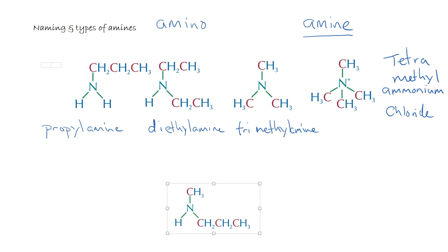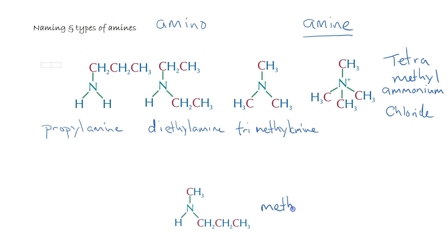What about if we've got different lengths of carbon chain? For example here we've got a secondary amine. We just name both of the side chains alphabetically. So we're now methylpropylamine.